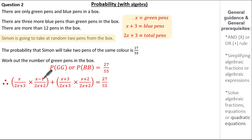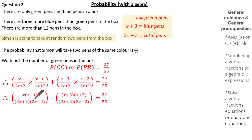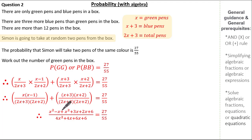So we have the probability of green-green OR blue-blue. Using our skills on algebraic fractions, we multiply numerators and simplify. Expanding: X times X is X squared, X times minus 1 is minus X. Multiplying out the blue brackets: X squared plus 3X plus 2X plus 6. With a common denominator, expanding the denominator: 2X times 2X is 4X squared, 2X times 2 is 4X, 3 times 2X is 6X, and 3 times 2 is 6. This still equals 27 over 55.